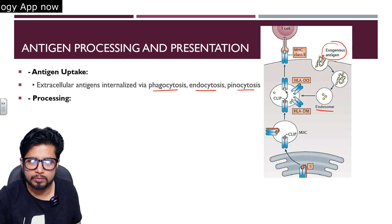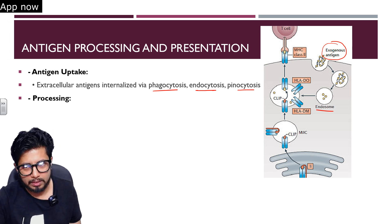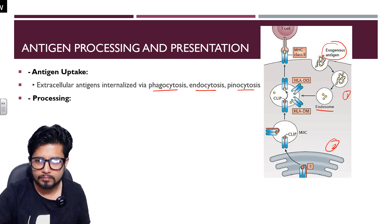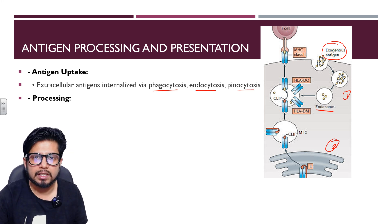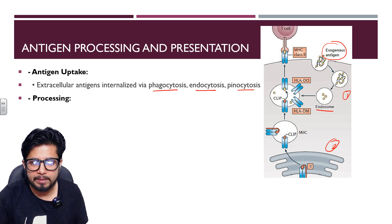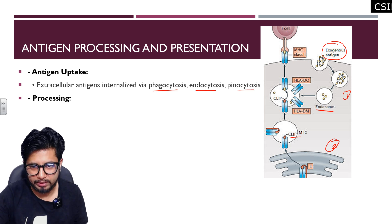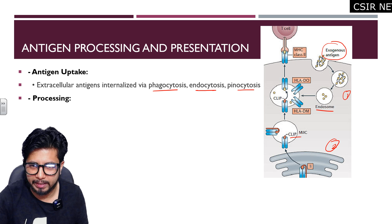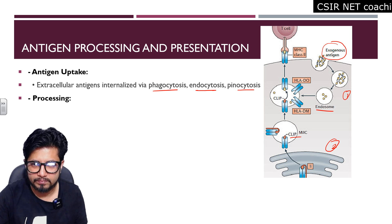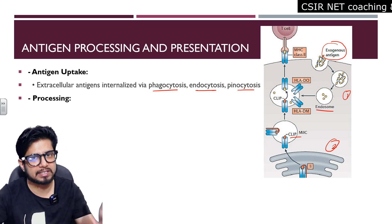Inside the endosome, the engulfed material is processed. Simultaneously, MHC class 2 molecules are produced inside the endoplasmic reticulum and then transported to the Golgi apparatus. The peptide binding cleft of the newly made MHC class 2 is blocked by a protein known as CLIP. From the ER to Golgi, they form a vesicle that travels to fuse with the cell membrane.